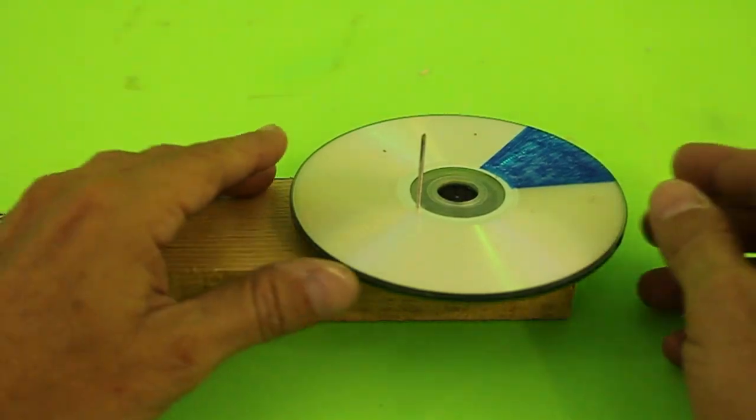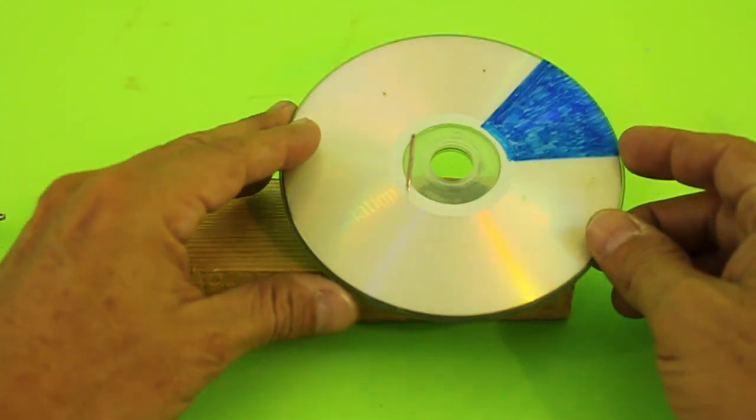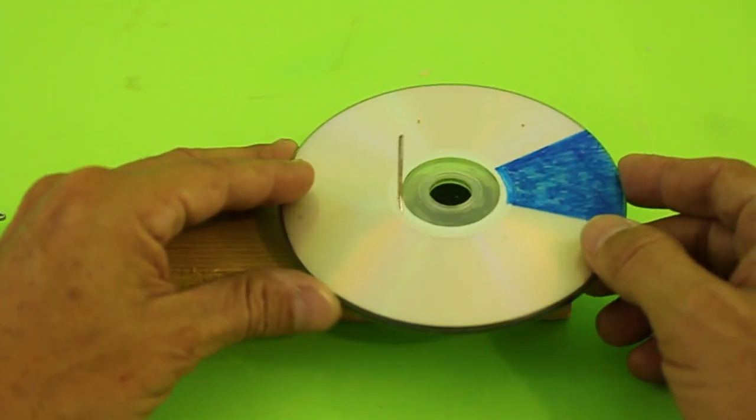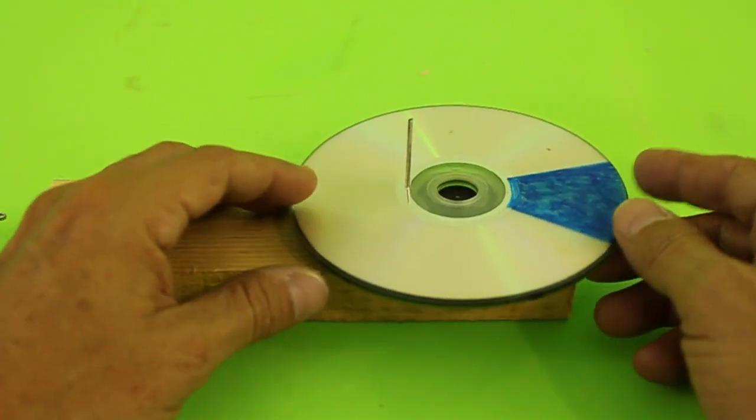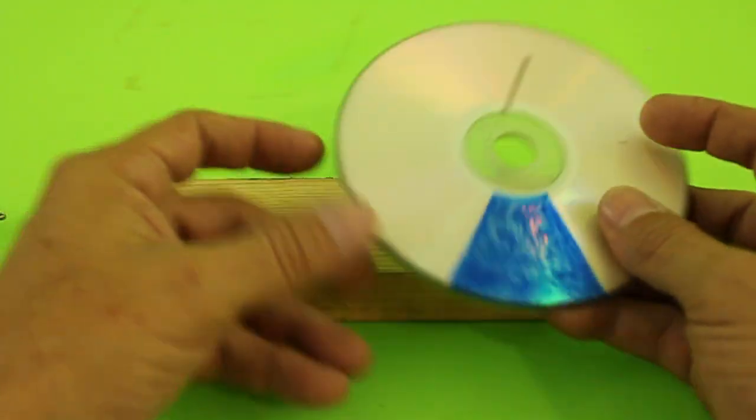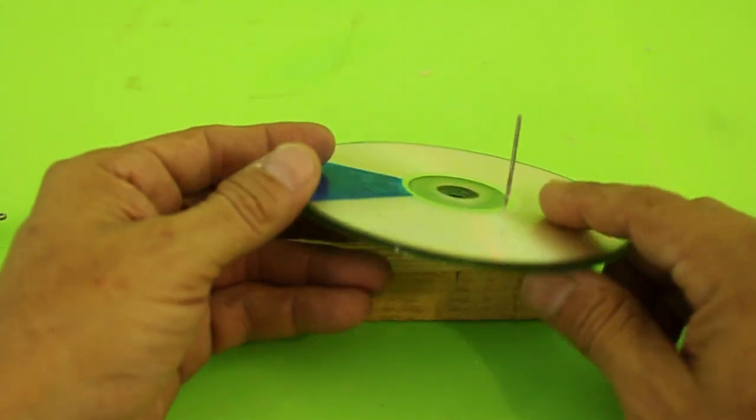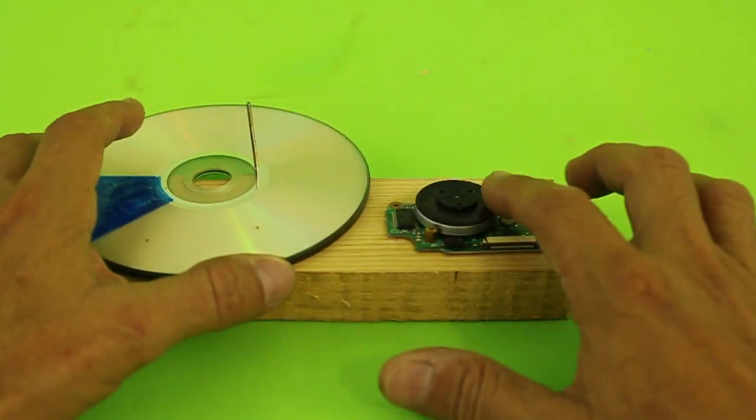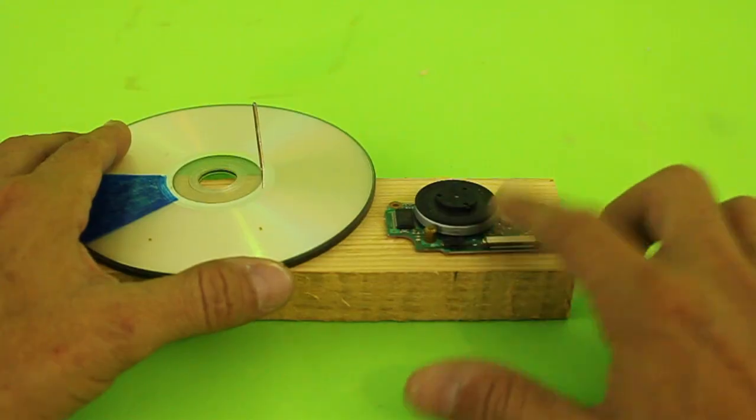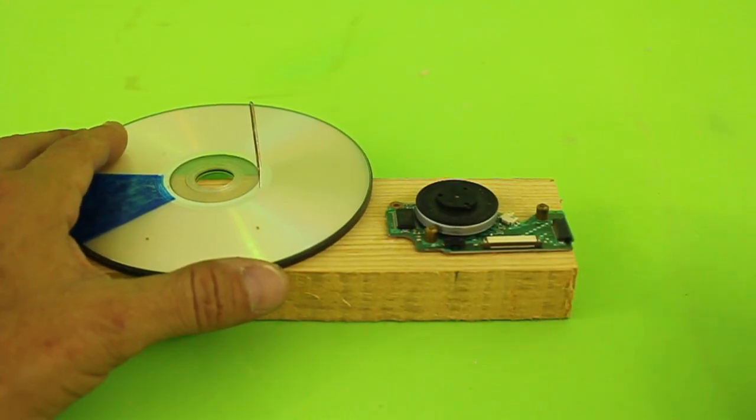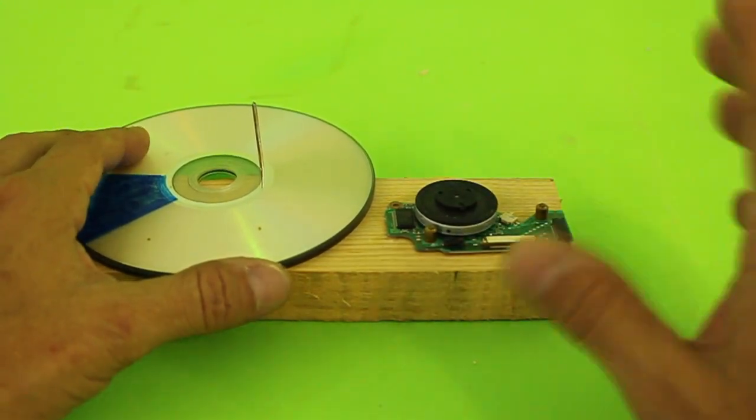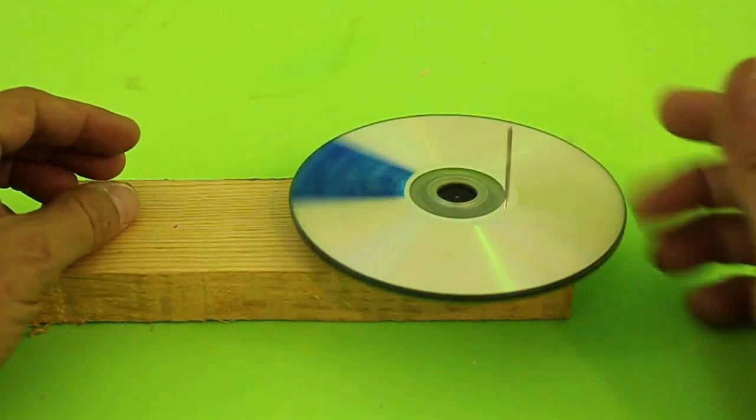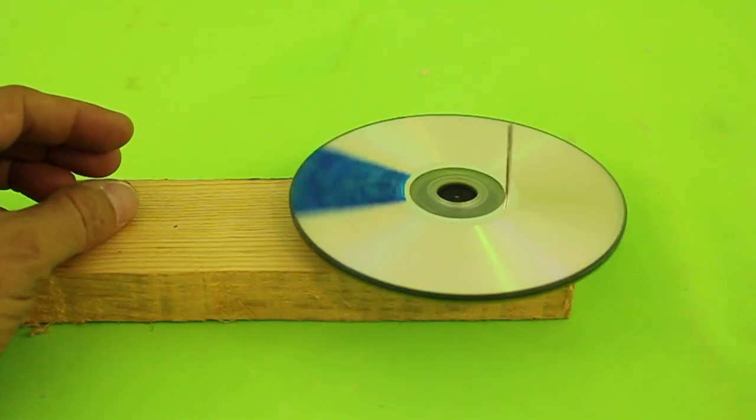The flywheel is made of compact discs. I have three CDs glued together in order to have more weight, and more weight means more inertia. I just made a hole in the CDs and inserted this piece of wire. The discs are put on the CD-ROM motor. The motor is not connected to anything. I just use it as a bearing so that the flywheel can rotate freely and with low friction.